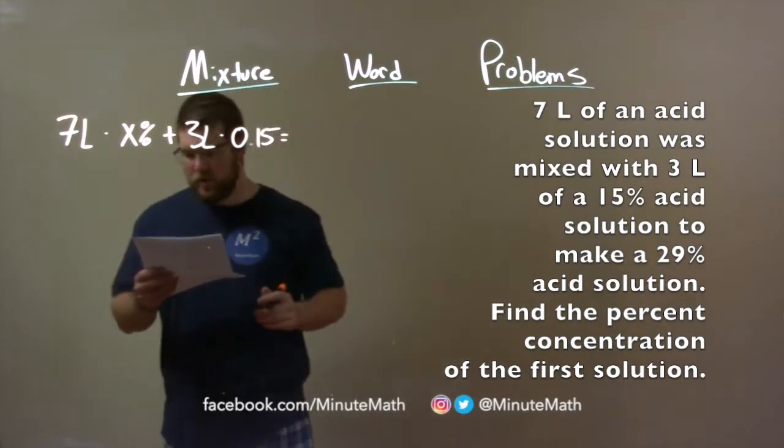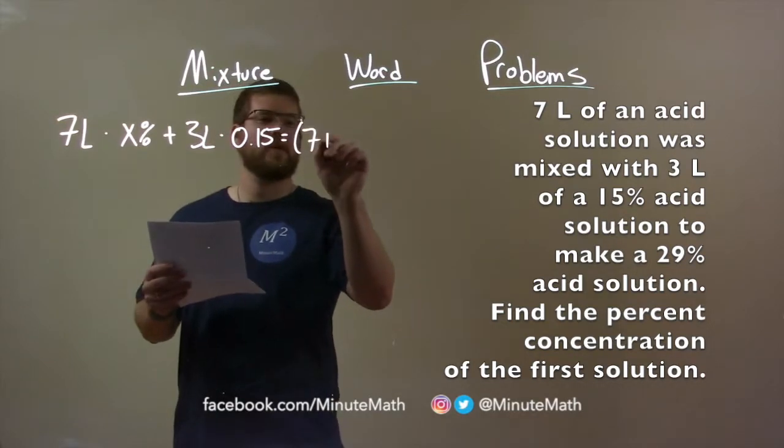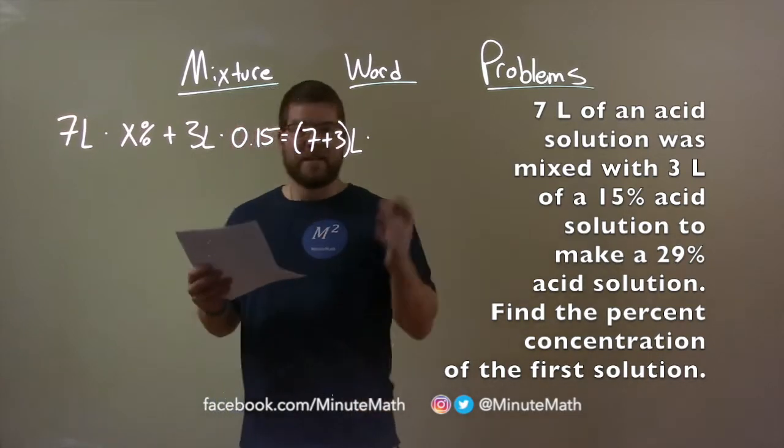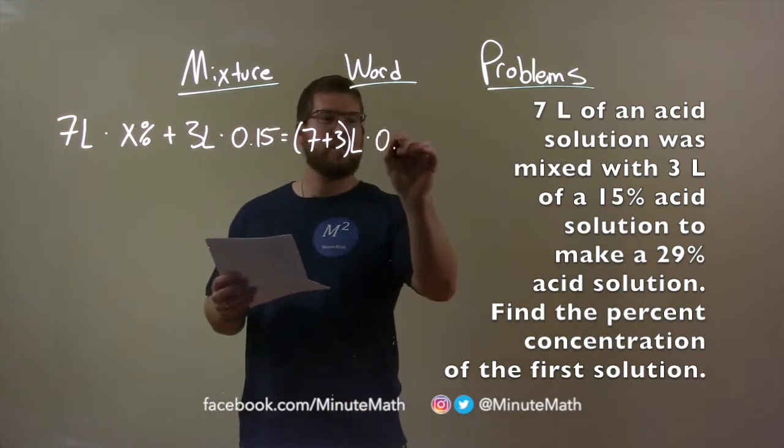When we combine that all together, our final volume is 7 plus 3 liters, and that's going to be multiplied by, or has a 29% concentration. So, multiply that by 0.29.